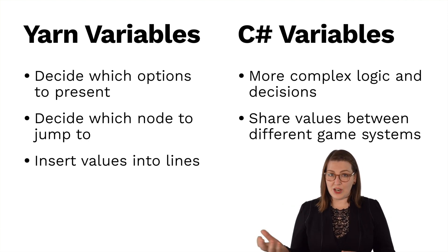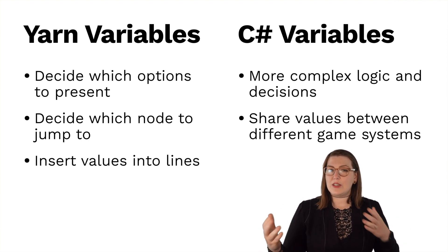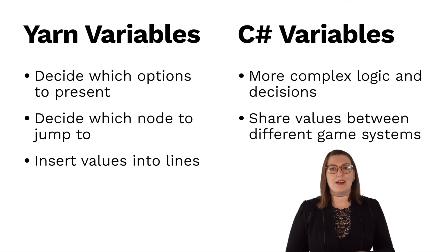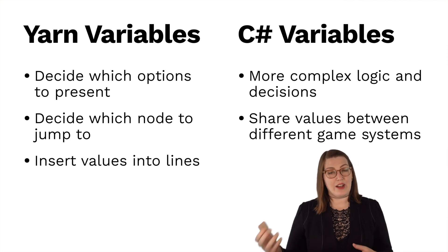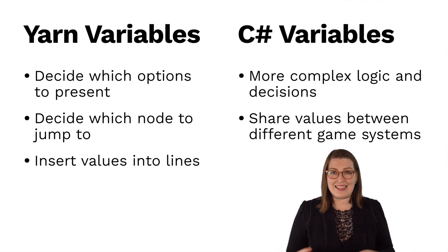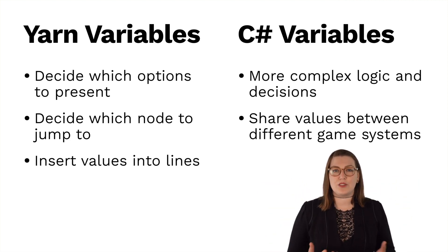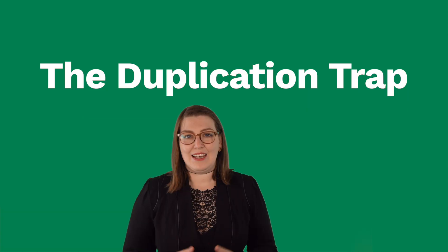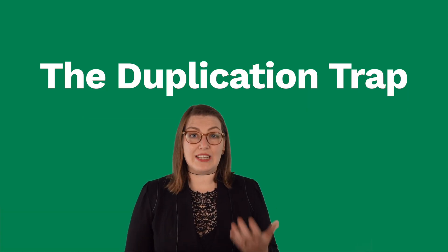When people start using these two things together — start going into their variable storage on the C-sharp side, or start doing logic that requires variables that come from both of these places — the thing that everyone immediately reaches for is to duplicate these variables. You have one on the C-sharp side and one on the Yarn side. They might have the same name, and you're going to use them interchangeably in the different places that you need them. Unfortunately, then we run into this duplication problem.